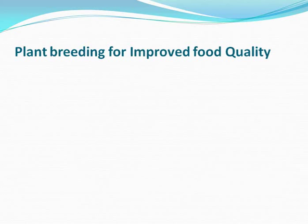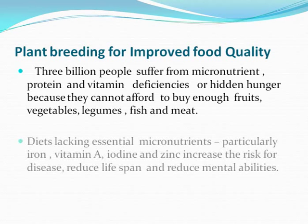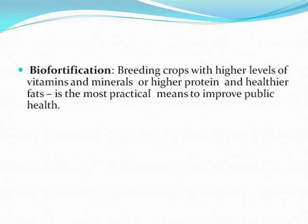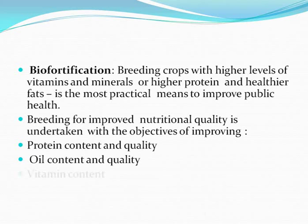Plant breeding for improved food quality: 3 billion people suffer from micronutrient, protein, and vitamin deficiencies — or hidden hunger — because they cannot afford to buy enough fruits, vegetables, legumes, fish, and meat. Diets lacking essential micronutrients, particularly iron, vitamin A, and zinc, increase the risk for disease, reduce lifespan, and reduce mental abilities. Biofortification: breeding crops with higher levels of vitamins and minerals, or higher protein and healthier fats, is the most practical means to improve public health. Objectives include improving protein content and quality, oil content and quality, vitamin content, and micronutrient and mineral content.